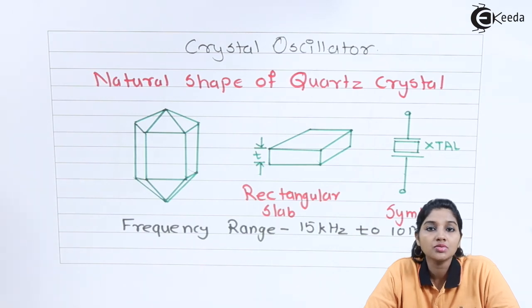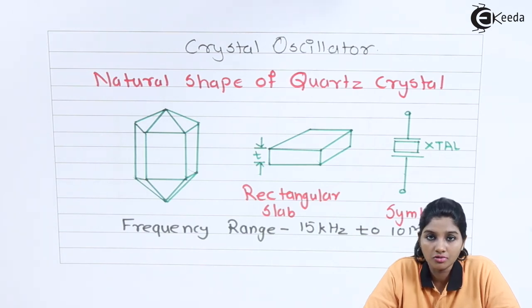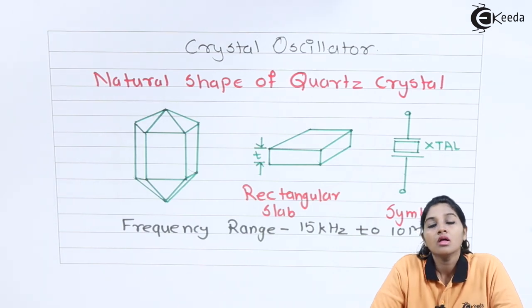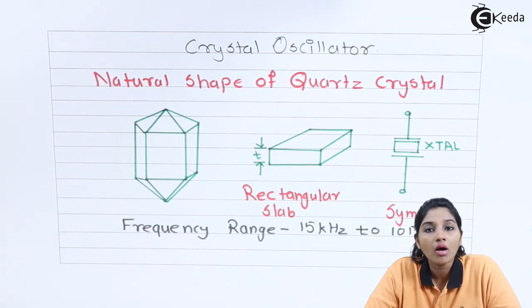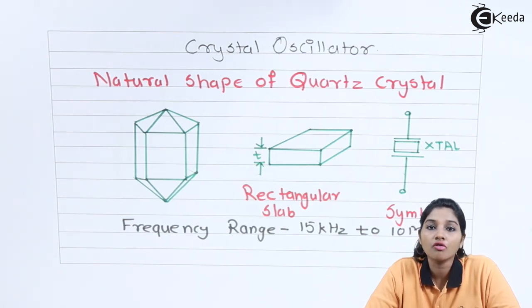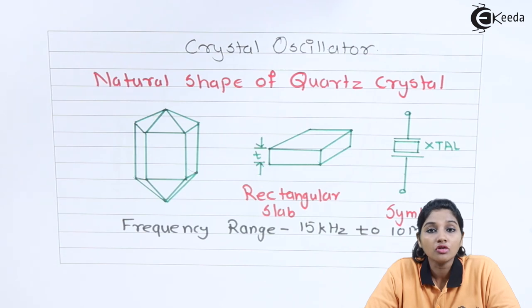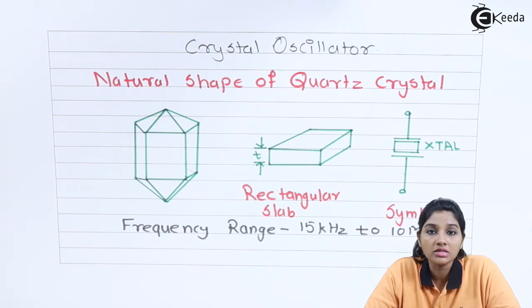We can say it is basically a tuned circuit oscillator only. The crystal oscillator uses quartz crystal for its construction. They are used to provide a highly stabilized and accurate signal at the output.